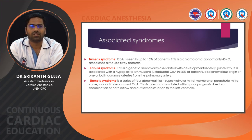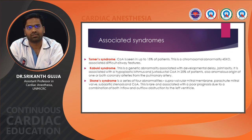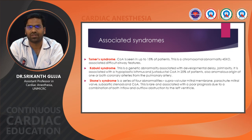Kabuki syndrome is a genetic abnormality associated with developmental delay and joint laxity. It is associated with hypoplastic isthmus and juxtaductal coarctation of aorta in 25% of patients, as well as anomalous origin of coronary from the pulmonary artery.